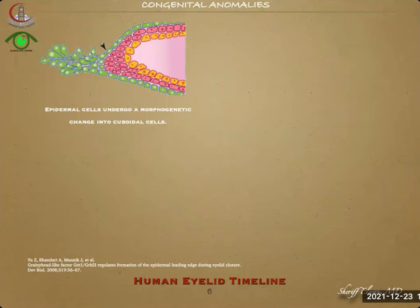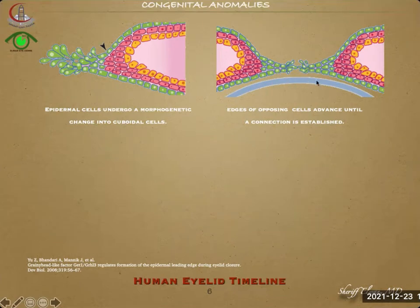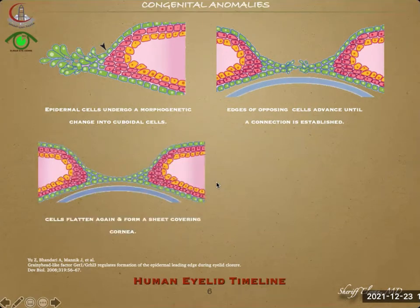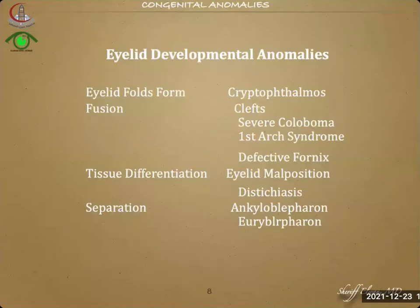The epidermal cells undergo a morphogenic change into cuboidal cells, and these cuboidal cells have an advancing edge until a constant connection is formed between the two lids in front of the body — the forming cornea. The cells then flatten again and form a single layer covering the cornea. Only epidermal layers fuse while the eyelid mesenchyme remains distinct.